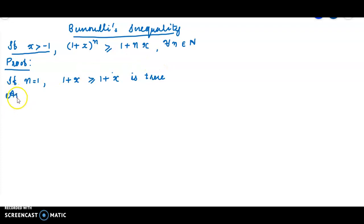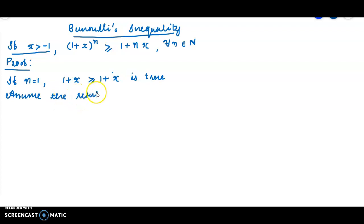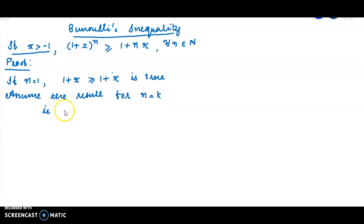Now assume the result holds for n = k. That is, the inductive assumption is: (1 + x) raised to k is greater than or equal to 1 + kx.